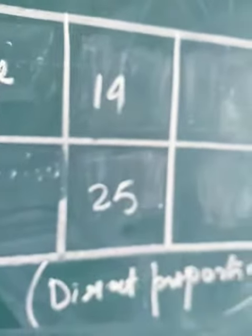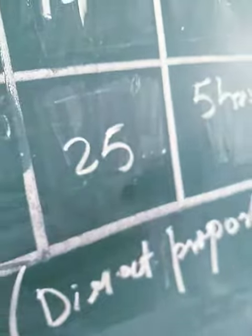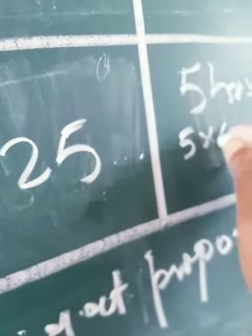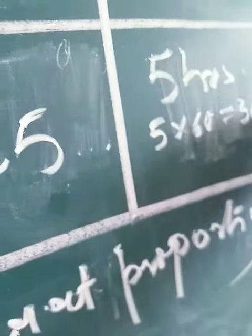In 25 minutes the car can travel 14 kilometers, so how far will it travel in 5 hours? Now you see it is given in hour form, but we have taken it in minute form, so we have to convert. That is 5 into 60, which gives you 300 minutes.